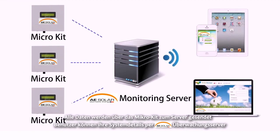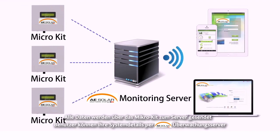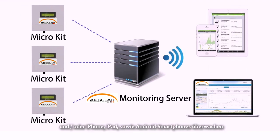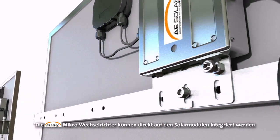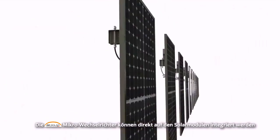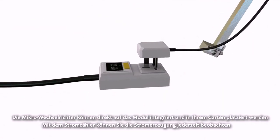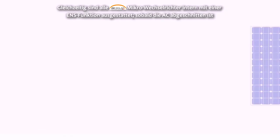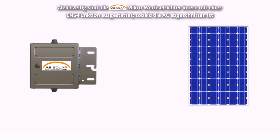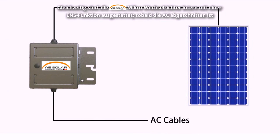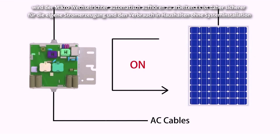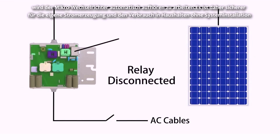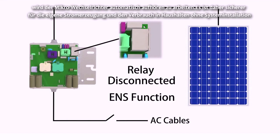All the data will be sent to the server through the micro kit. Users can monitor their system details via a monitoring server and or iPhone, iPad, or Android smartphones. The microinverter can be integrated directly onto solar panels. Each microinverter internally integrates an ENS function — once the AC is cut off, the microinverters will automatically stop working, making it more secure for household self-power generation and consumption.